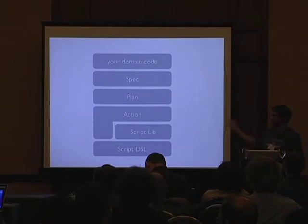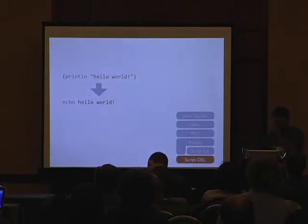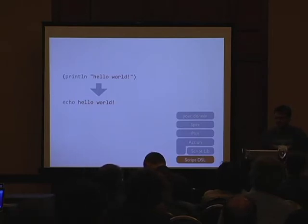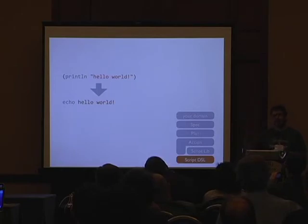I'm going to focus on this stack of abstractions and show a ton of code. At the bottom of the stack, closest to the servers, is a script DSL we call Stevedore. These transforms turn Clojure code into shell scripts. The shell script is target-dependent, so if you're targeting different servers, the shell script may be different from one targeting OSX.